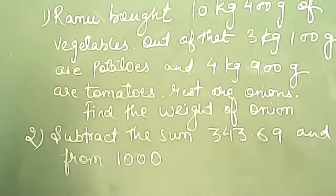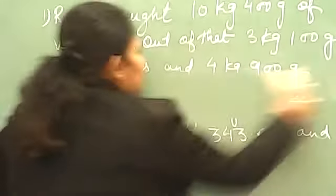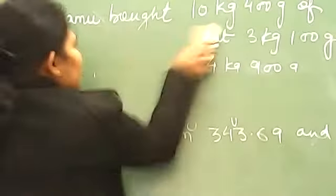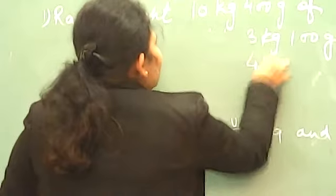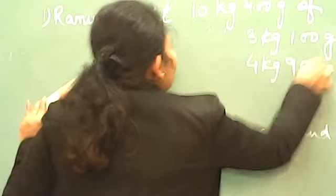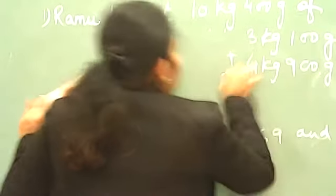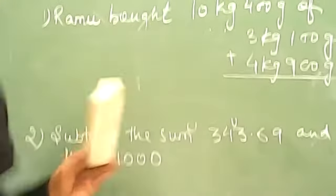Now look at here. Simply we will add this: 4 kg 900 grams to 3 kg 100 grams.